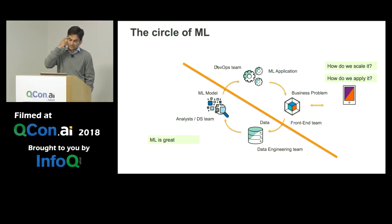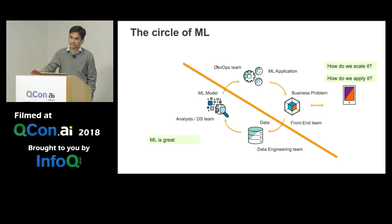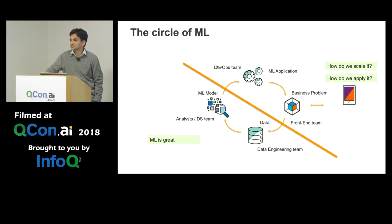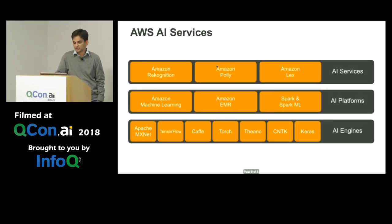Today we are really living in this broken world and everybody's trying to solve this. The data science team is saying machine learning is great and I can do such amazing things, and the app team is tasked to apply it, scale it, and provide that app experience. How do we solve this?